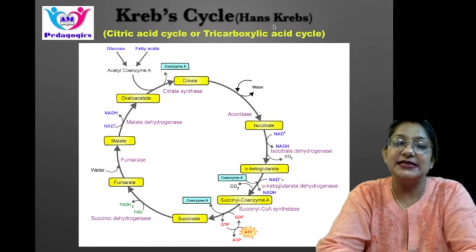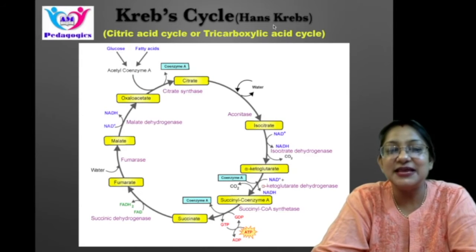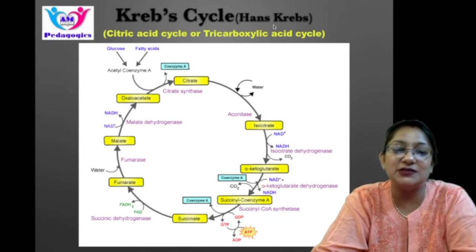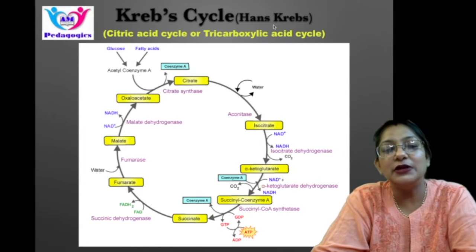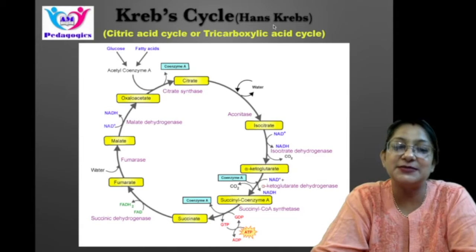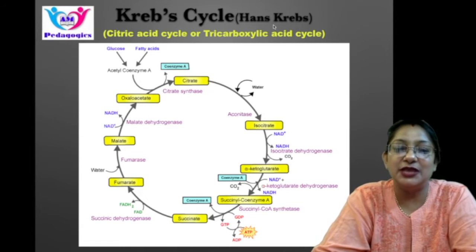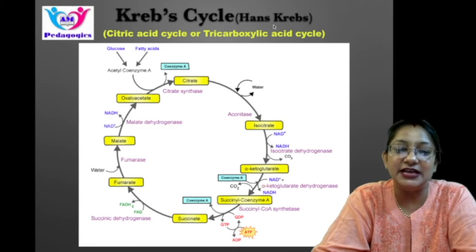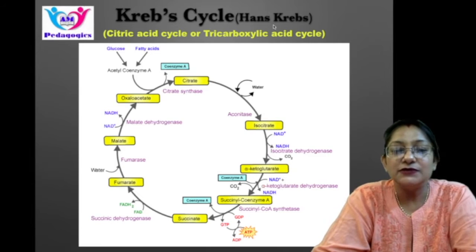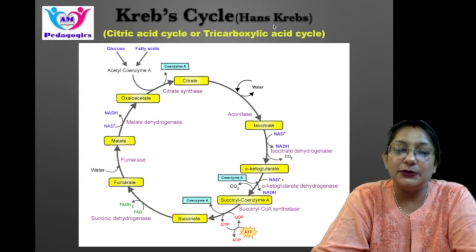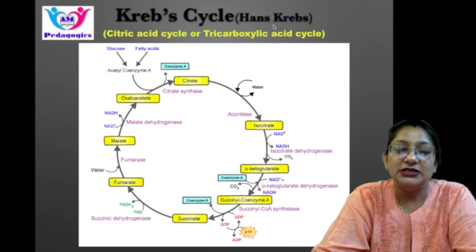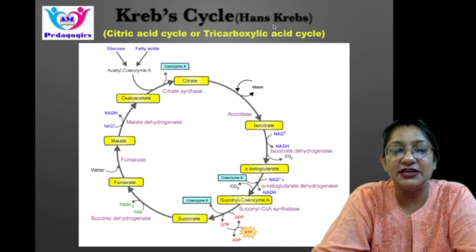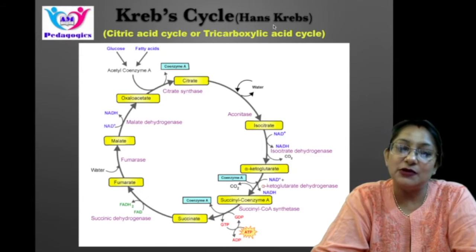The Krebs cycle is a series of 8-step processes. The acetyl group of acetyl coenzyme A is oxidized to form 2 molecules of carbon dioxide, and in this process ATP energy is produced. Reduced high energy compounds NADH and FADH2 are formed. Two molecules of acetyl coenzyme A are produced from each glucose molecule, so 2 turns of the Krebs cycle are required, which produce carbon dioxide, 6 NADH, 2 FADH2, and 2 molecules of ATP.